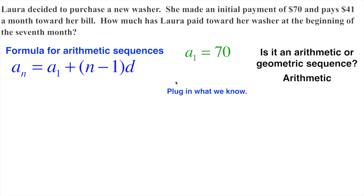The d value would be the difference. How much does it change every month? In this case it goes up $41. It goes up because we're not talking about the bill or how much she owes on it—we're talking about how much she's paid. So the amount she's paid increases by $41 every month. Now we plug this into the equation. For A₁, that's the first term, 70. And d, the difference, is 41.